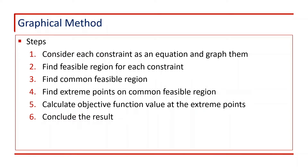Let's revisit the steps to solve LPP using the graphical method. Step 1 is to consider each constraint as an equation and graph them. Step 2 is to find the feasible region for each constraint, and Step 3 is to find the common feasible region. Step 4 is to find extreme points on this common feasible region. Step 5 is to calculate the objective function value at these extreme points, and Step 6 is to conclude the result.